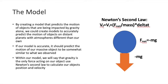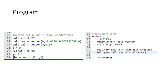By creating a model that predicts the motion of objects being impacted by gravity alone, we could create models to accurately predict the motion of objects on distant planets with atmospheres very different than our own. If our model is accurate, it should predict the motion of our massive object to be somewhat similar to what we observed. Within our model, we will say that gravity is the only force acting on our object and use Newton's second law to calculate our object's position and velocity.